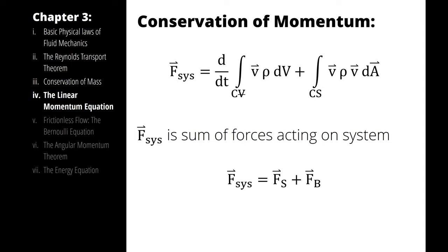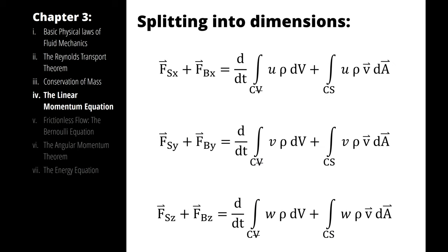So, our conservation of momentum in the X, Y, and Z directions look like this. Note that this velocity vector appears in all three dimensions. It is not simplified to the X component or the Y component or the Z component. It is just the velocity vector as a whole.